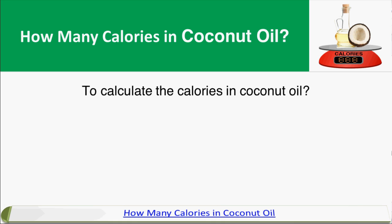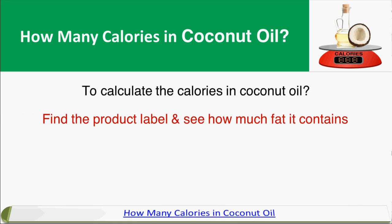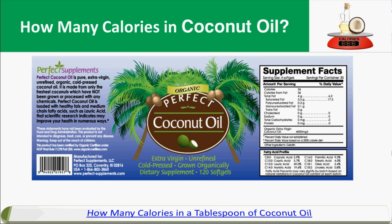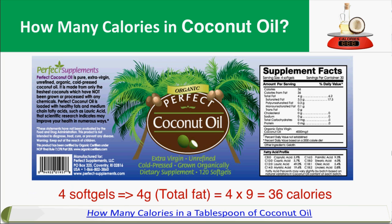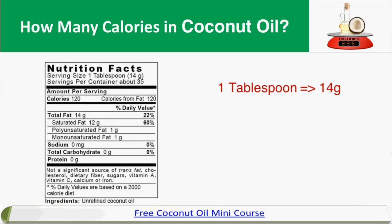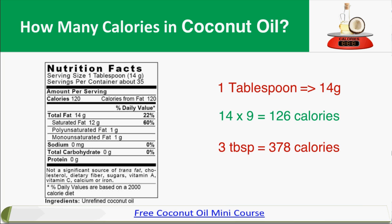So how to calculate the calories in coconut oil? Very simple — look up the product label and see how much fat it contains. For example, a brand called Perfect Coconut Oil states that each four soft gels contain 4 grams of total fat. So 4 grams multiplied by 9 is 36 calories. Another label shows 1 tablespoon is equivalent to 14 grams of total fat. So 14 multiplied by 9 is 126 calories, meaning 3 tablespoons per day would be 378 calories.